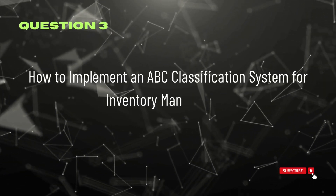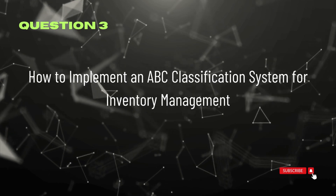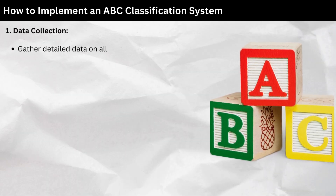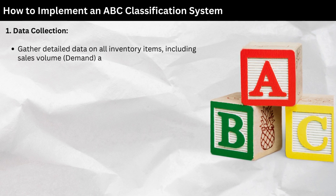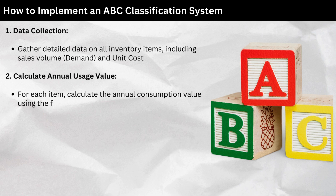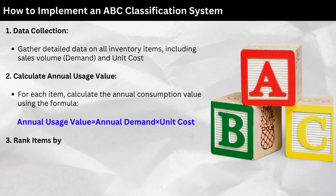Question 3: How to implement an ABC classification system for inventory management. Step 1 — Data collection: Gather detailed data on all inventory items, including sales volume, revenue, and consumption rate over a specific period. Step 2 — Calculate annual usage value: For each item, calculate the annual consumption value using the formula: Annual usage value = Annual demand × Unit cost.